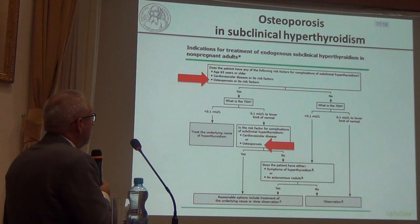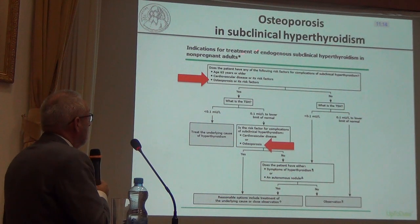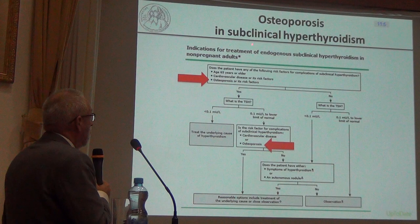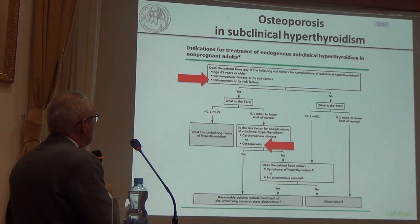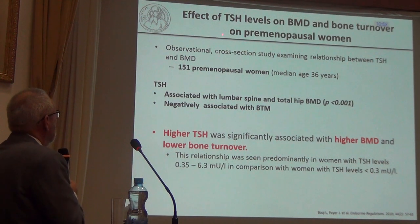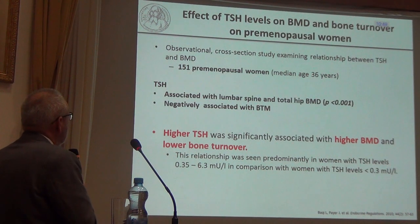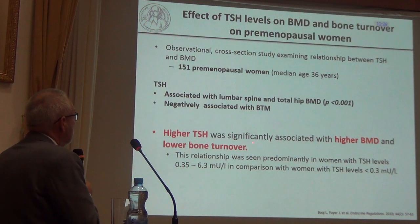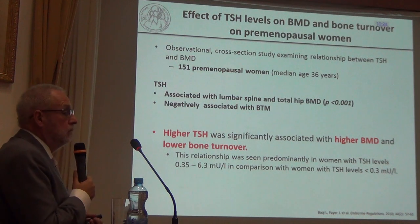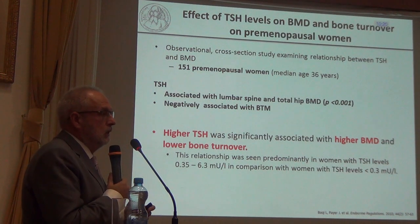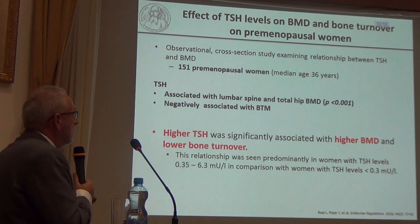Even subclinical hyperthyroidism is one of the indications for treatment, and osteoporosis should always be considered in premenopausal women with subclinical hyperthyroidism — DEXA screening is warranted. In a study of more than 150 premenopausal women, higher TSH was significantly associated with higher BMD and lower bone turnover markers. A TSH level below 0.3 was the discriminating threshold — women with TSH under 0.3 were at higher risk of lower BMD.